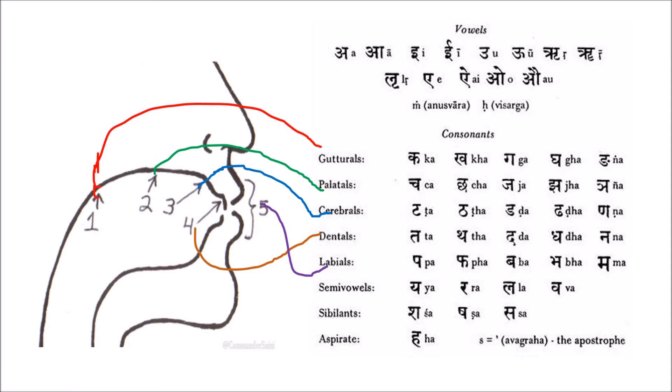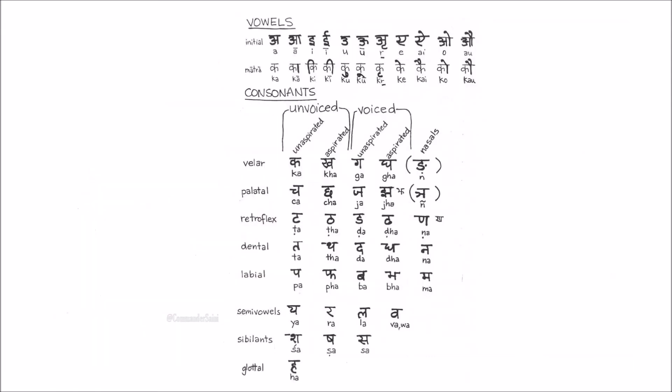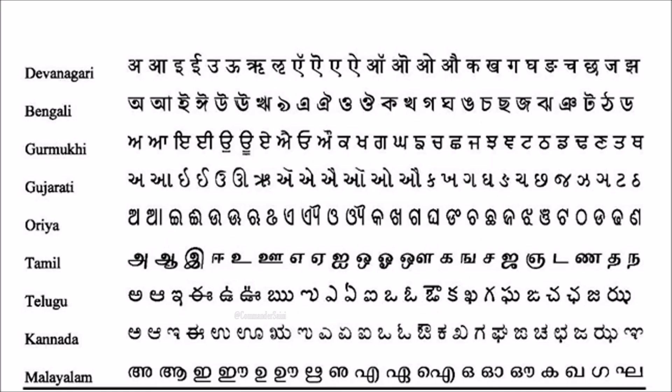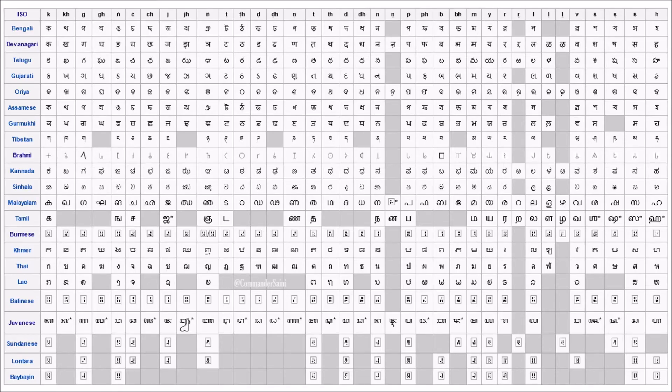So Indic alphabets are very scientifically placed — not only in rows but the columns are also well structured. All languages of India are similarly structured; there is no primary difference in the structuring or the sequence of the alphabet. Even in UTF encoding, all Indic languages are very similar to each other and easy to correlate. Even Sinhala, Khmer, and Thai actually draw from Brahmi and use a similar structure of alphabets.